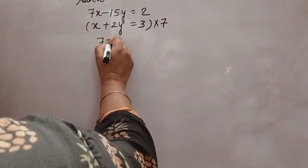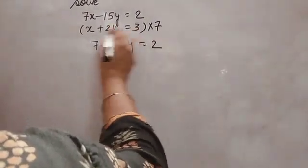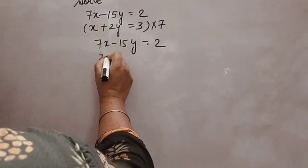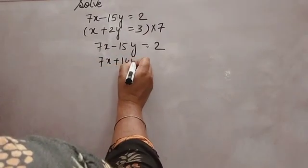First equation you will write as it is. Second equation you will multiply full by 7. So you will get 7x plus 14y is equal to 21.